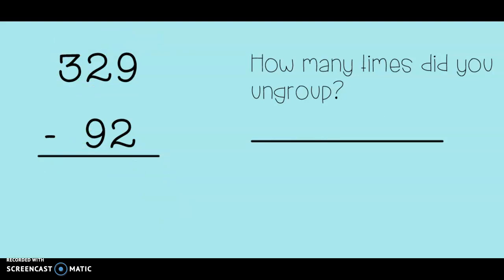329 minus 92. Now in this problem, you can see that the bottom number does not have any hundreds. So I lined them up, making sure that the ones were lined up and the tens were lined up. That's very important any time we subtract. Let's do 9 minus 2 first. 9, 8, 7. No ungrouping needed.